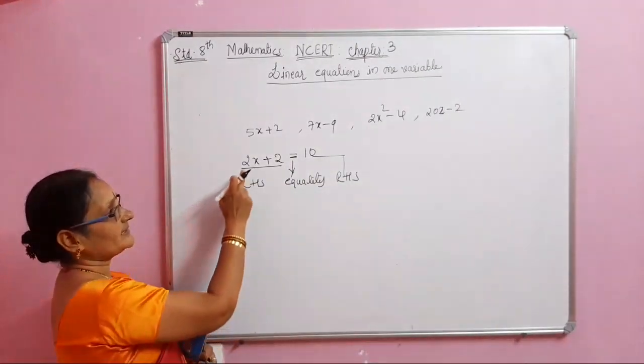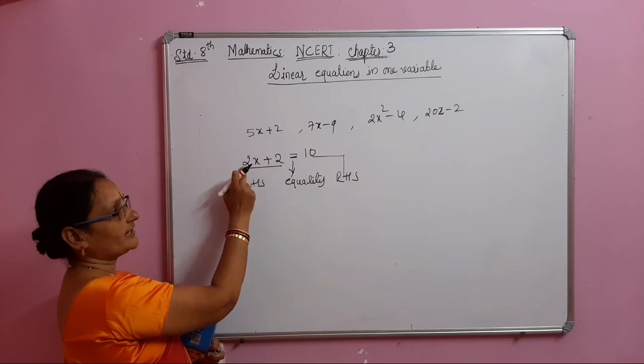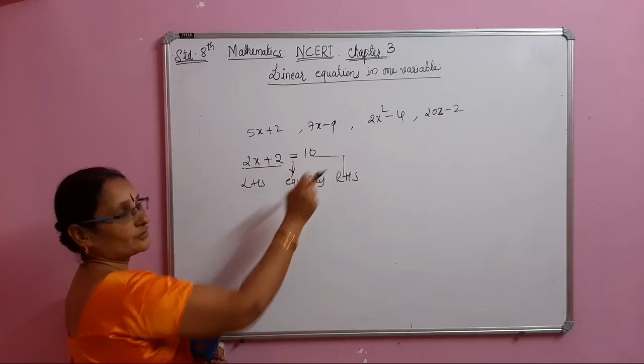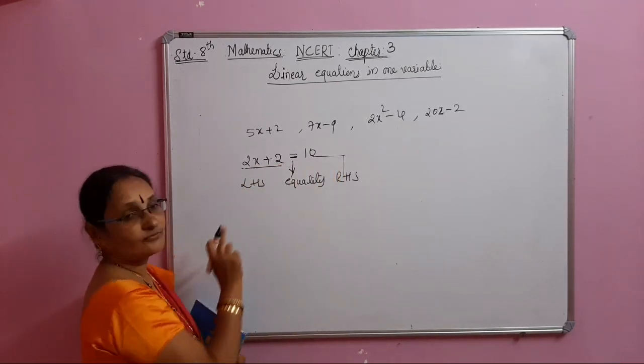For example, in 2x plus 2 equal to 10, substituting x equal to 4 gives 2 times 4 plus 2 equals 10. So LHS equals RHS for x equal to 4.